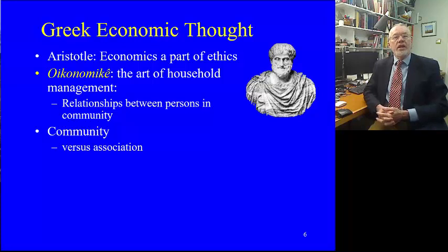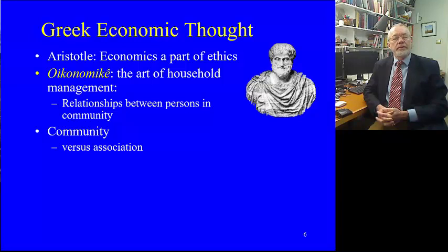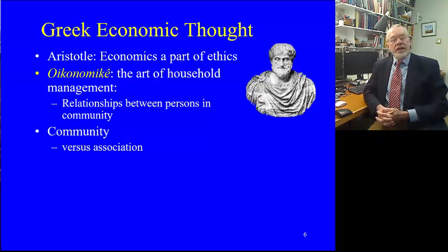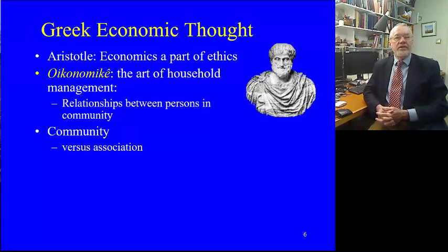Aristotle realized there was a parallel between the way a person might organize their household and broader society. The Greek household consisted of a large number of people — more than simply mum, dad, and the kids. It was an extended household, usually rural, resembling something like a small village, headed by the father of the family. The art of household management meant that Aristotle studied economics very much from the perspective of the appropriate relations between persons in this little microscopic community of the household — maybe 20, 30, or 50 people.